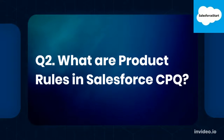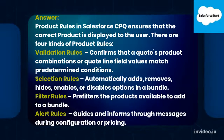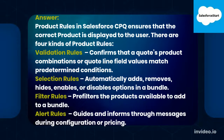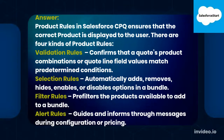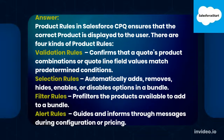Q2. What are Product Rules in Salesforce CPQ? Product Rules in Salesforce CPQ ensure that the correct product is displayed to the user. There are four kinds: Validation Rules confirm that a quote's product combinations or quote line field values match predetermined conditions. Selection Rules automatically add, remove, hide, enable, or disable options in a bundle. Filter Rules pre-filter the products available to add to a bundle. Alert Rules guide and inform through messages during configuration or pricing.